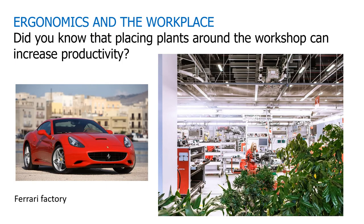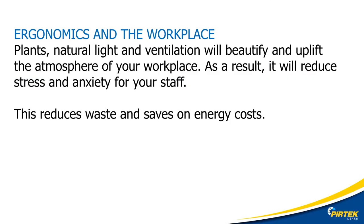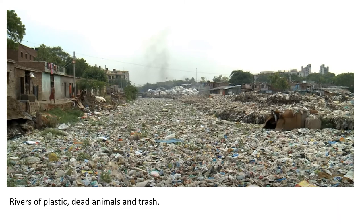Ergonomics and the workplace — here we have a photo of the Ferrari assembly line that looks more like a hotel lobby. Natural lighting, ventilation, and aesthetics all improve the working environment and willingness to participate in sustainable activities. When something becomes normal, it's hard to see the problem. The people living along a river of rubbish would be more concerned about their next meal — the environment would be low on their priorities, and they could do little about it due to political and socio-economic circumstances. The problem needs to be addressed at the manufacturing level with recyclables and renewable materials.